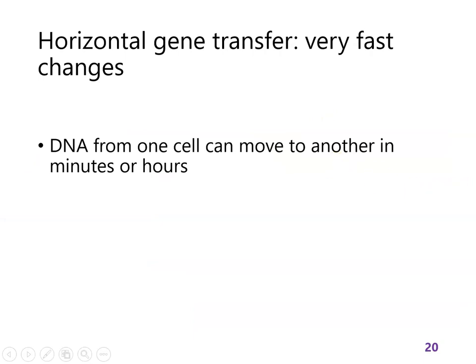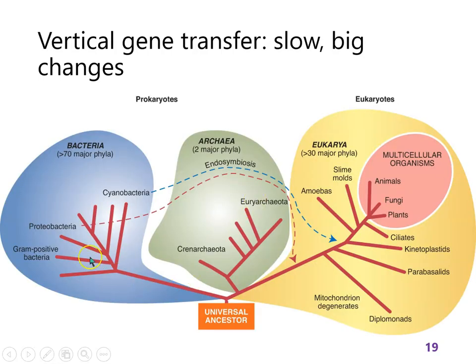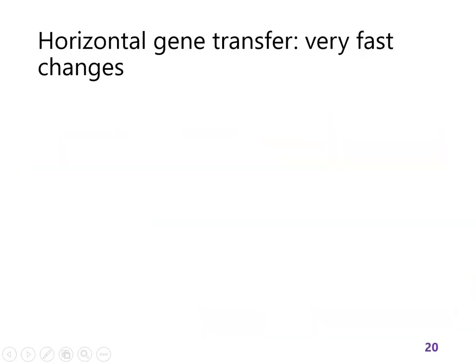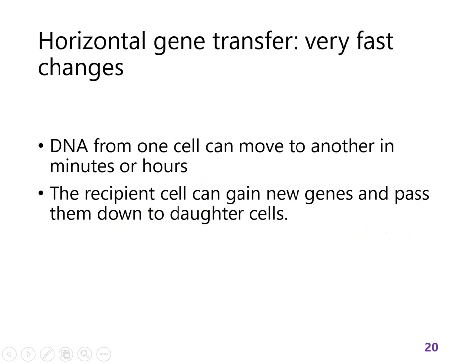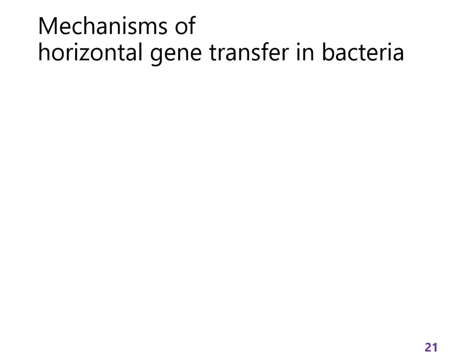DNA moves from one cell to another in less than a day. On the timescale of a billion years, that's the blink of an eye. The recipient cell, if it benefits from those genes, suddenly everything has changed and that one is going to win natural selection in its environment. So what we're going to look at here are the three major ways that bacteria can pick up new genes or share genes — the three mechanisms of horizontal gene transfer that we care about.